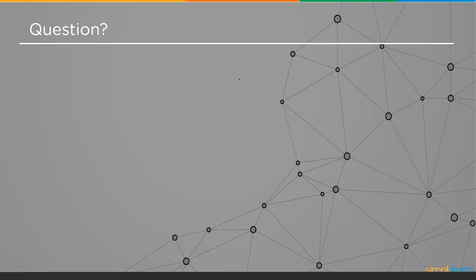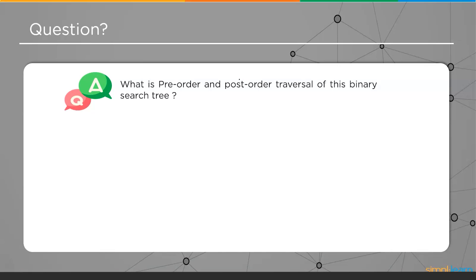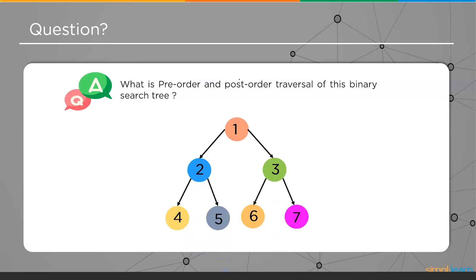Here is a simple question: what is the pre-order and post-order traversal of the binary search tree shown on screen, with elements 1, 2, 3, 4, 5, 6, and 7? Find the pre-order and post-order traversal of this binary tree and let us know the answer in the comment section below.